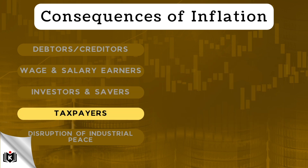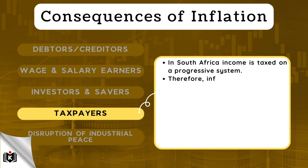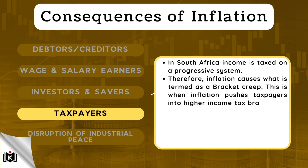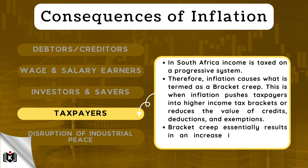Inflation also affects taxpayers. In South Africa, income is taxed on a progressive system. Therefore, inflation causes what is termed bracket creep. This is when inflation pushes taxpayers into higher income tax brackets or reduces the value of credits, deductions, and exemptions. Bracket creep essentially results in an increase in income taxes without an increase in real income.